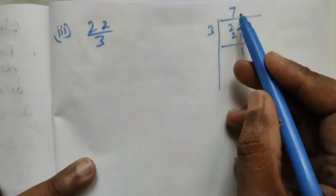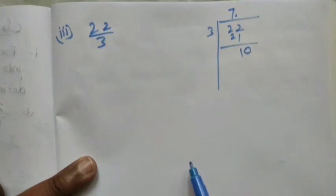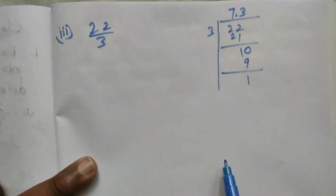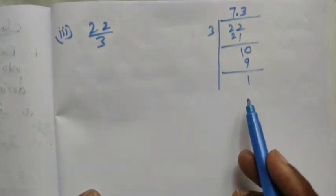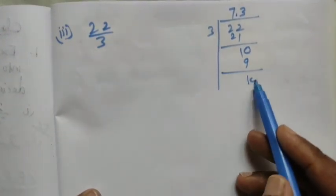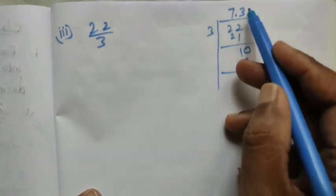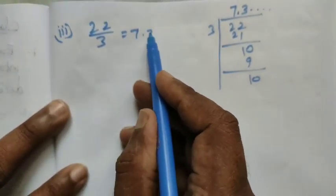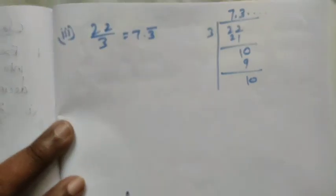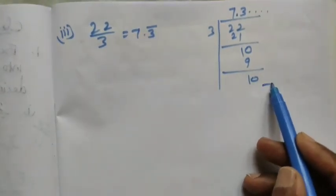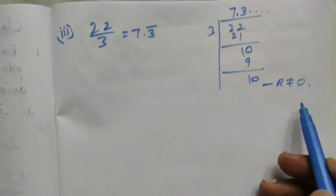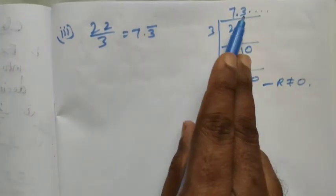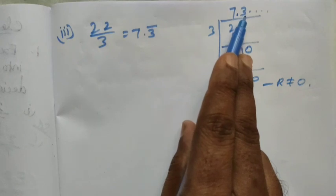It's not possible, so put decimal point and add 0. 3 times 3 is 9, remaining is 1. So this 1 is repeated. 10 divided by 3 is 3 with remainder 1. So we get 7.3 bar, which means 7.333... This is remainder not equal to 0. The digit 3 is repeated.